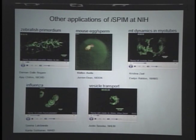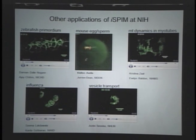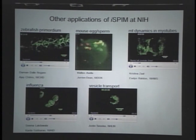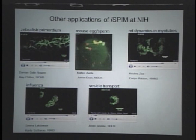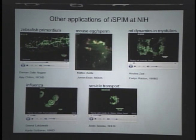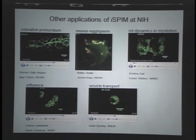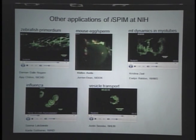You can use this system to image many other phenomena besides worms. You can image things like the zebrafish lateral line, interactions between mouse egg and sperm — observing events after sperm binds to the egg and penetrates the zona pellucida — microtubule dynamics, influenza infection of cells, and vessel transport. Anything that requires acquiring volumetric images fast without killing the organism, this microscope is excellent at doing.